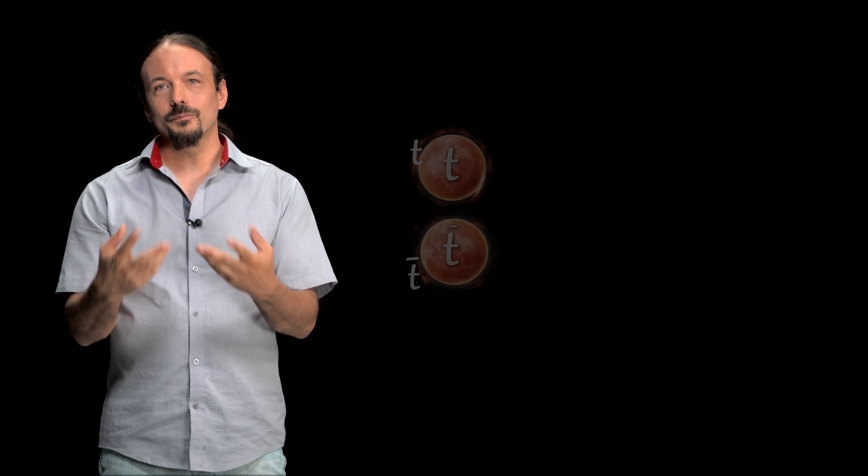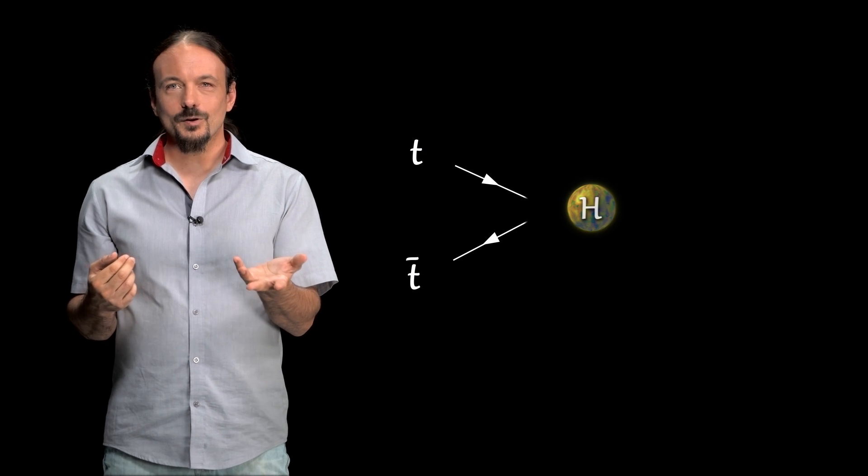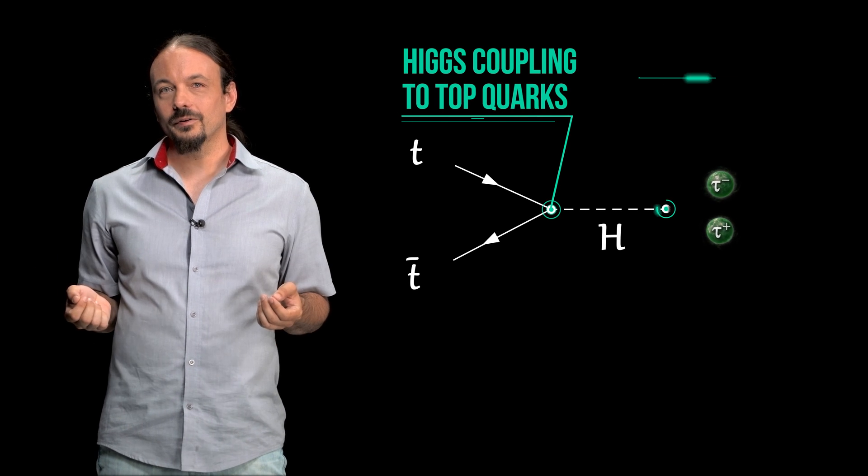Well, there is another way. Not by looking at decay into top quarks, but by looking at production from top quarks. Just like decay probability depends on coupling, production probability depends on coupling.